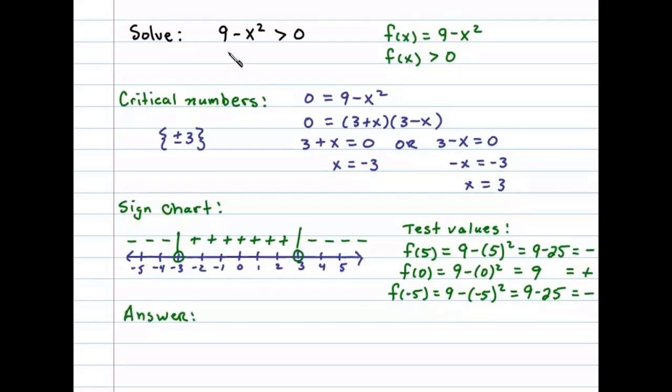This is the sign chart and we'll use this to answer the question. The question asks for what x values is this quadratic expression greater than 0, in other words when is this positive. From the sign chart you can see that when x is in this interval, the results are positive. I'll shade that in and convert that to interval notation. In interval notation, the answer is all the x values from negative 3 to 3.